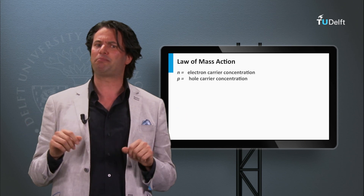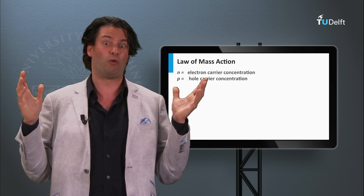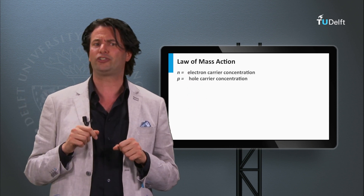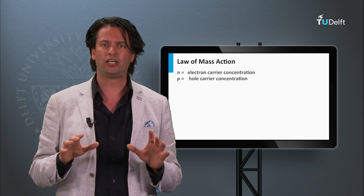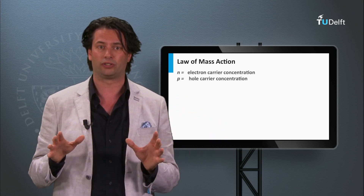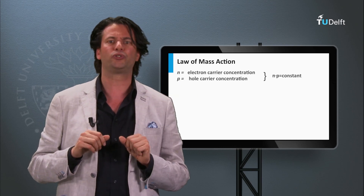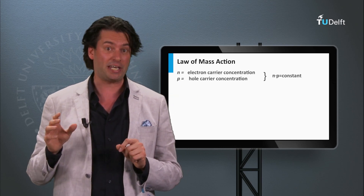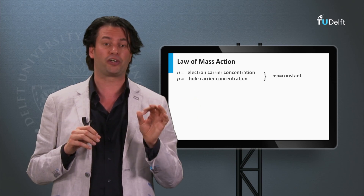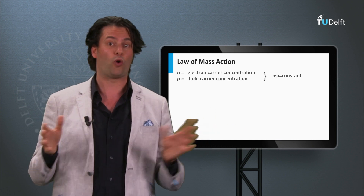The density of charge carriers can be described by the law of mass action. This law tells us that at a given temperature the product of the electron density and the hole density is constant, independent of the doping concentration. If n corresponds to the electron density and p corresponds to the hole density, this law tells us that the product n times p is constant, if we would manipulate either n or p.